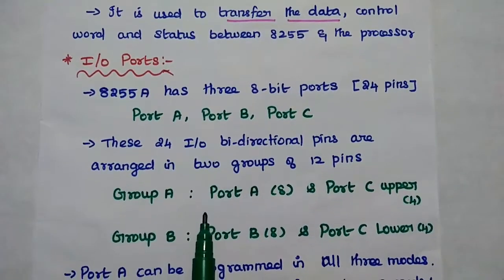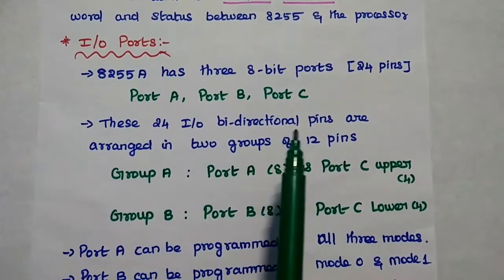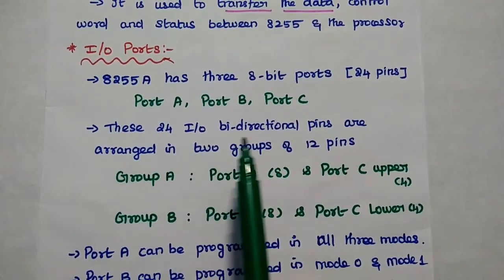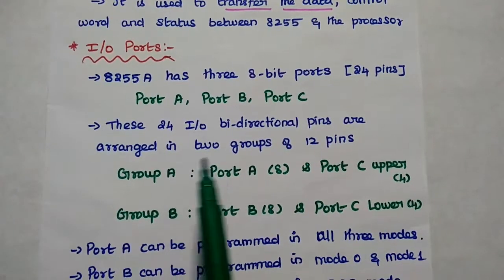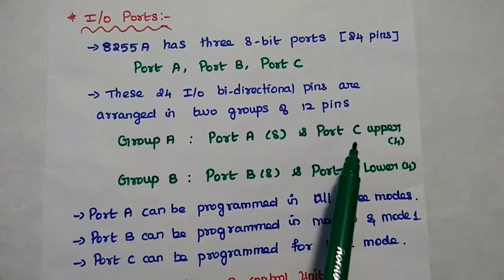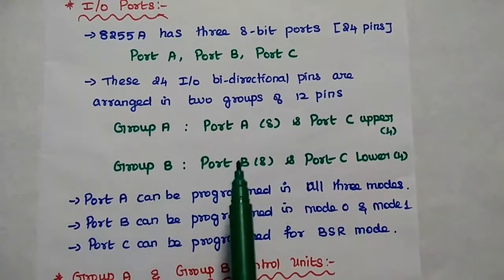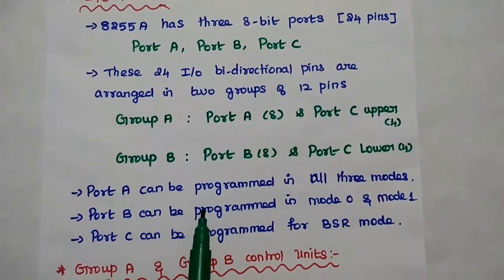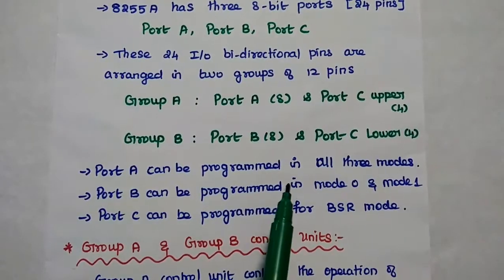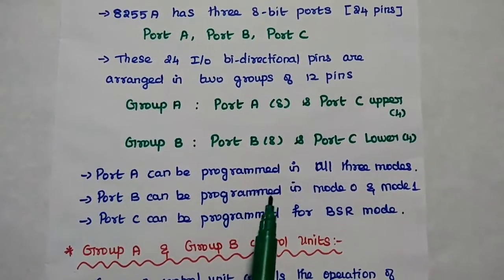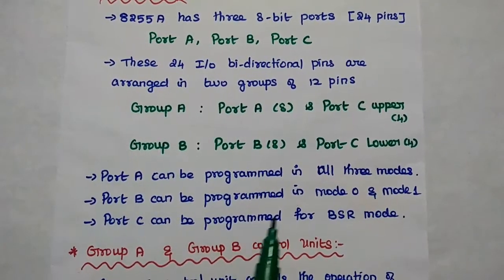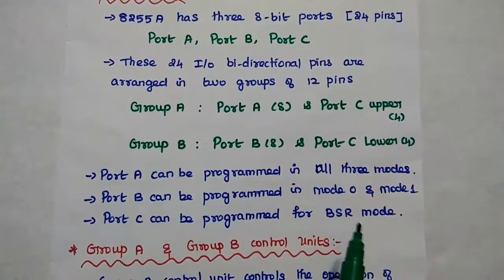The 8255A has three 8-bit ports: Port A, Port B, and Port C. These 24 input/output bidirectional pins are arranged in two groups of 12 pins — Group A (Port A and Port C upper) and Group B (Port B and Port C lower). Port A can be programmed in all three modes: Mode 0, Mode 1, and Mode 2. Port B can be programmed in Mode 0 and Mode 1. Port C can be programmed for bit set or reset mode.